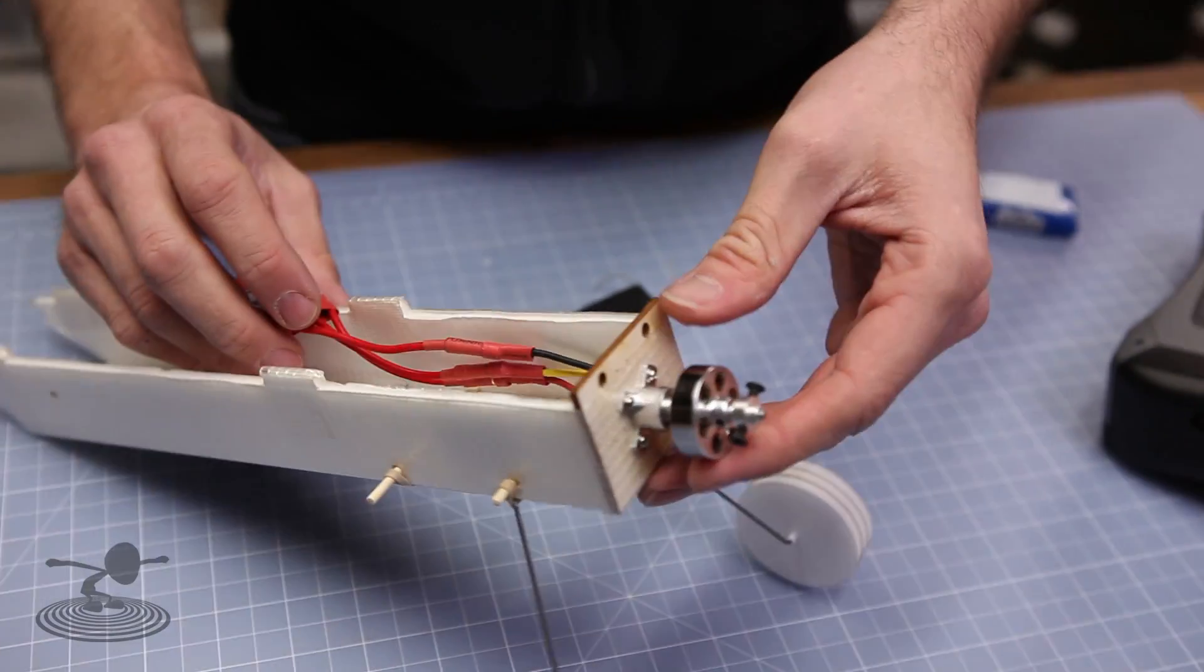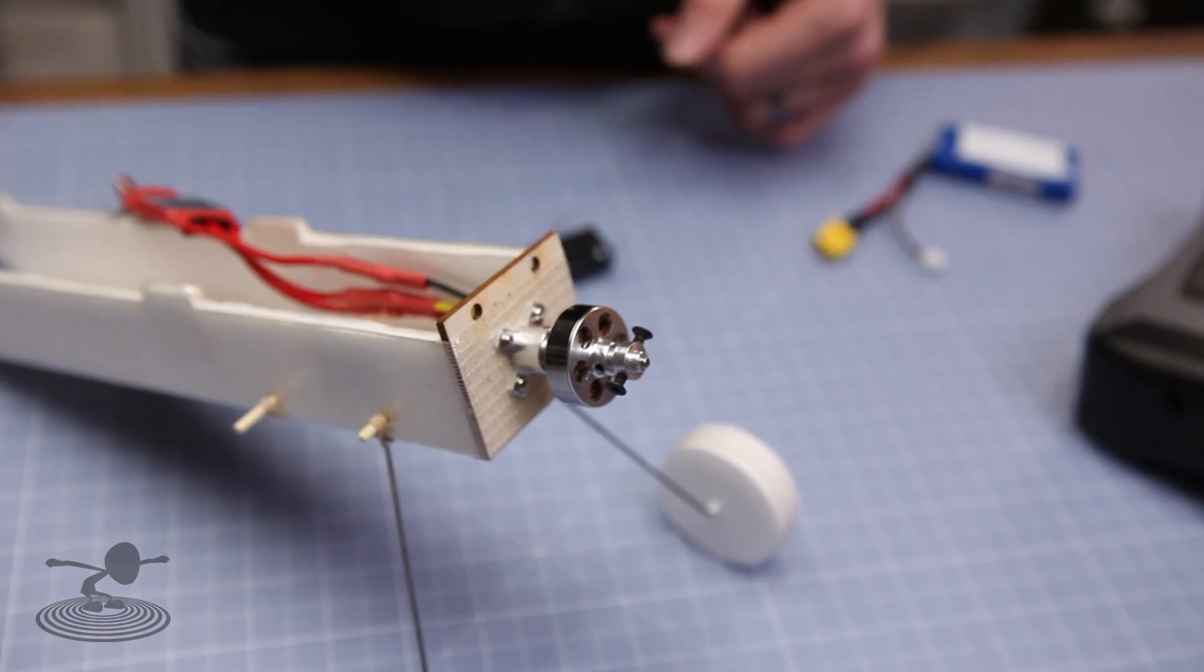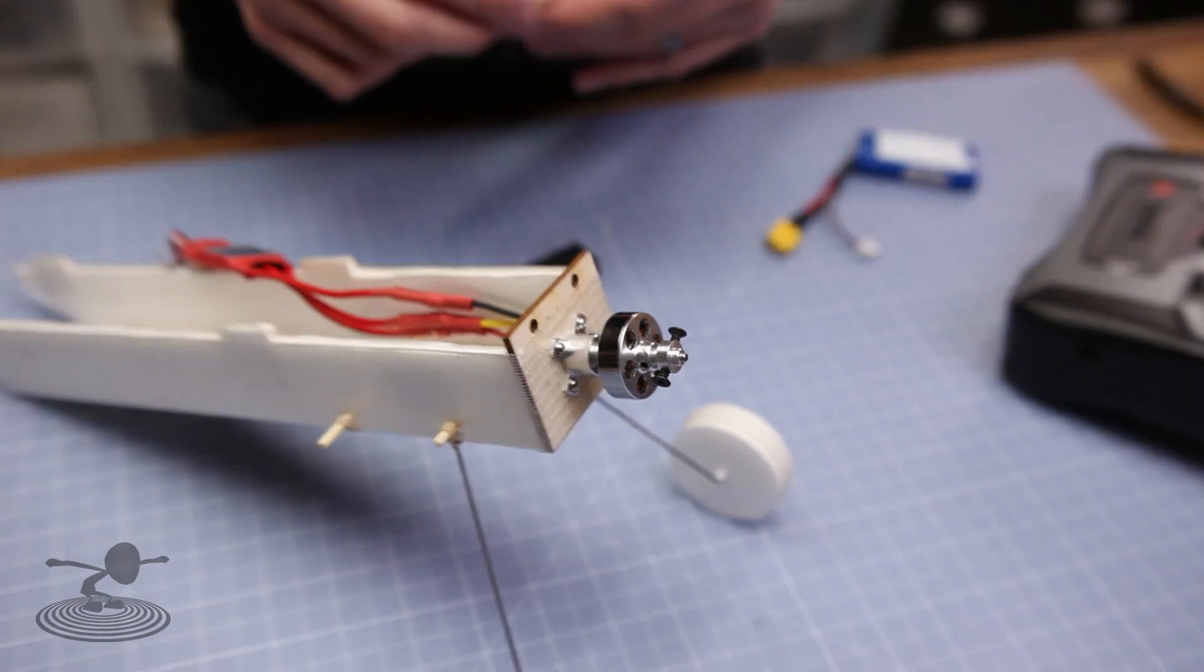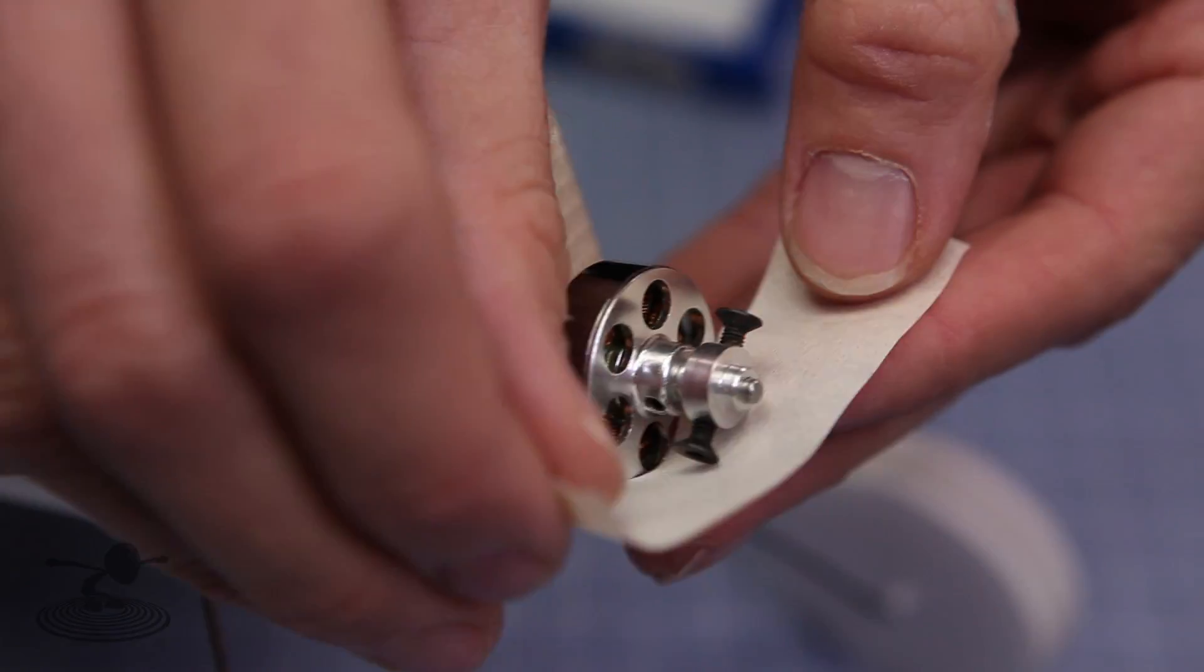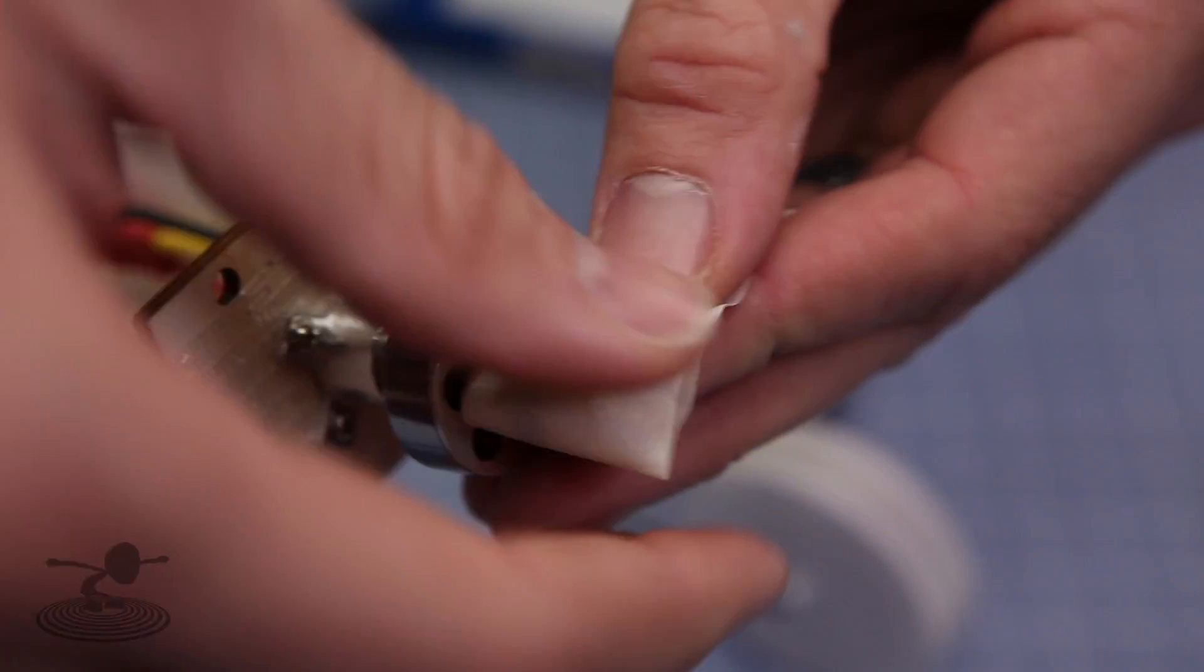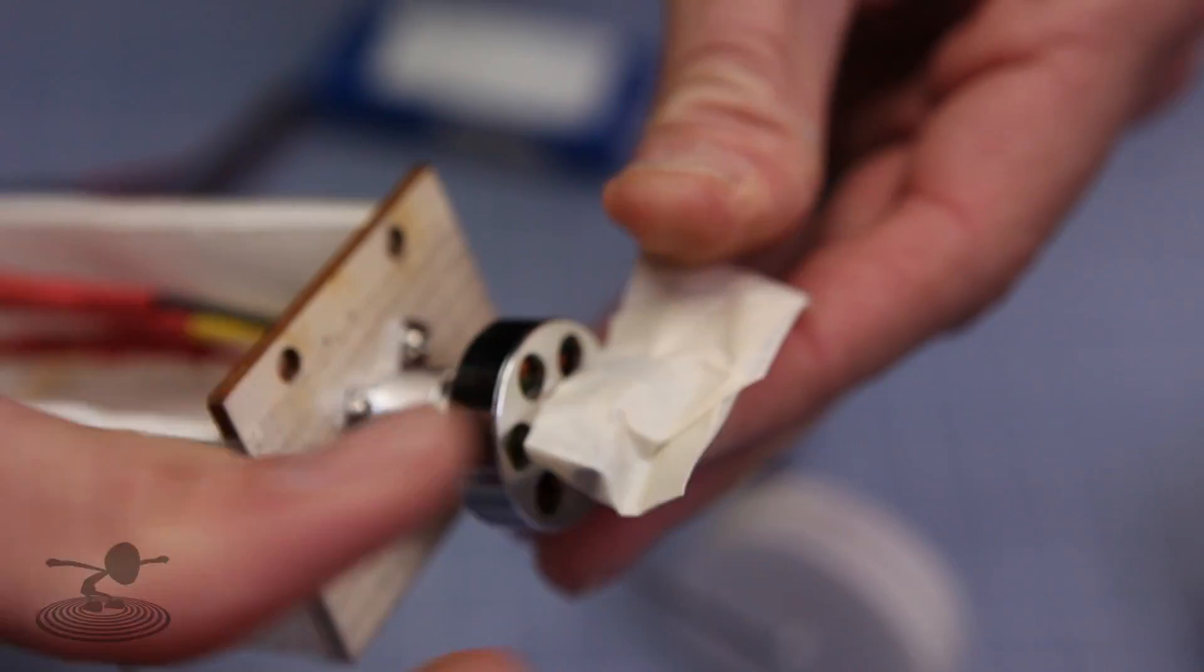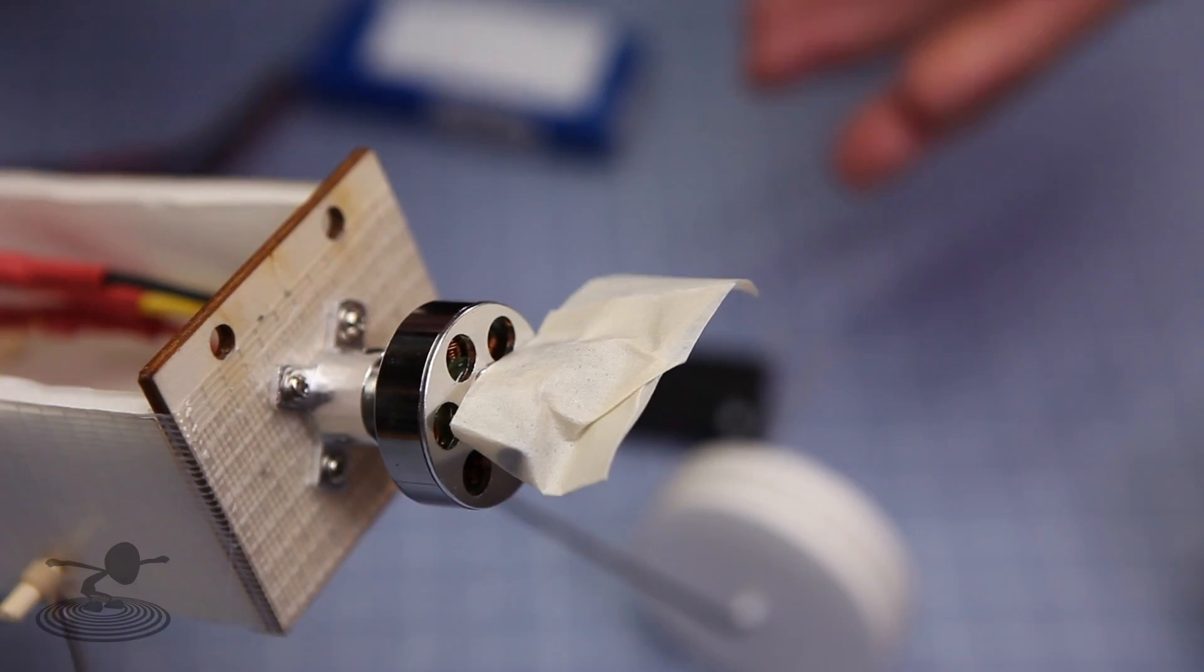And also it's very important while we're doing this step not to have a prop on your airplane. Reason being is if it goes full throttle for any reason it can cause damage to people or things around you. Simply put a piece of tape. This will give us a good indicator on whether the motor is running clockwise or counterclockwise. We want it to run counterclockwise to be proper.